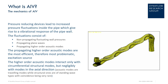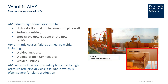These acoustic modes are also travelling modes that interact only with the circumferential structural modes. AIV generates high tonal noise levels through high-velocity fluid impingement on the pipe wall, alongside turbulent mixing and shock waves downstream of a flow restriction.